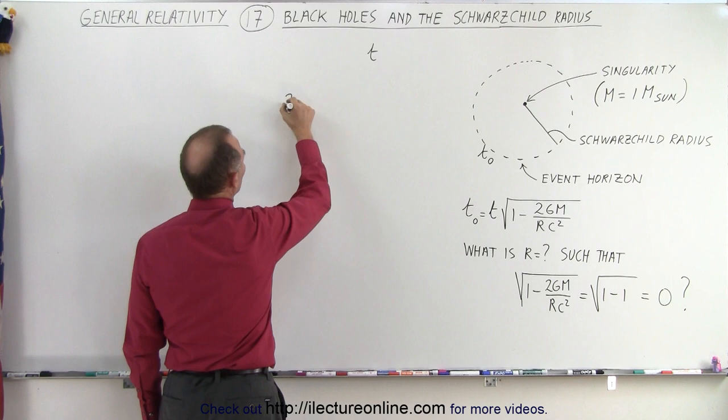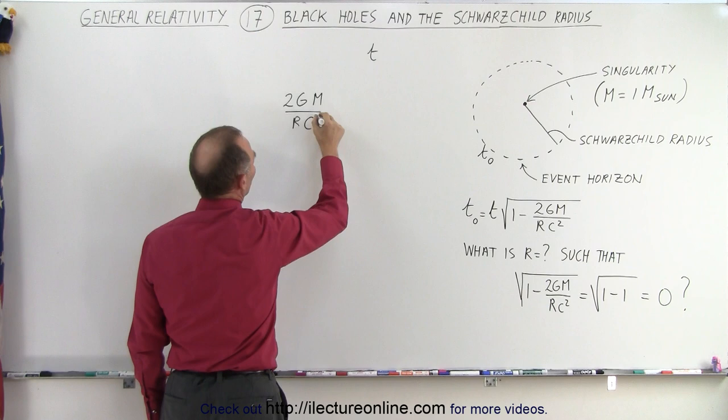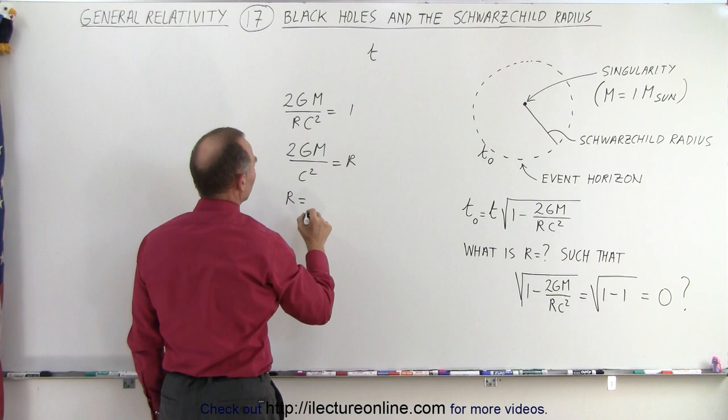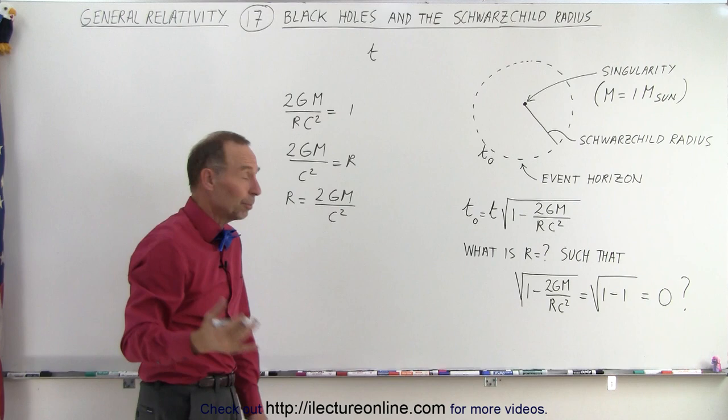So that means that 2gm divided by r times c squared would equal to 1. Now if we put the r over here, that means that 2gm over c squared is equal to r. Or turn the equation around, r is equal to 2gm over c squared. And then they plug in the numbers.